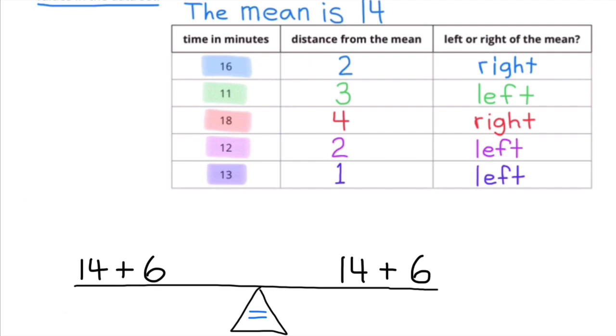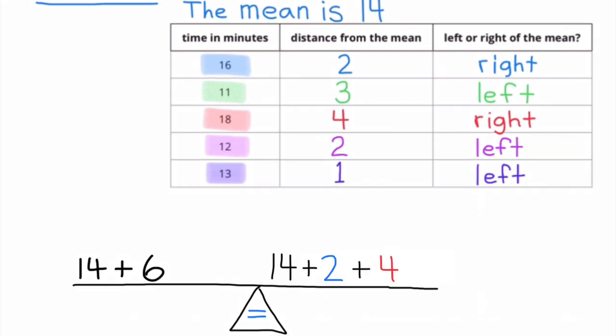14 plus 6 on the left side balances with 14 plus 6 on the right side. 2 minutes to the right of 14 is 16, and 4 minutes to the right of 14 is 18, which balances with the minutes on the left side of 14. 11 is 3 minutes to the left of 14, 12 is 2 minutes to the left of 14, and 13 is 1 minute to the left of 14.